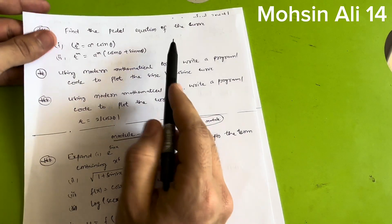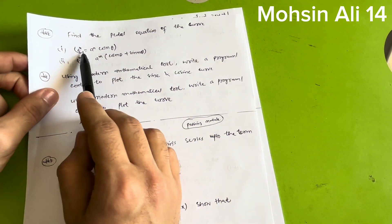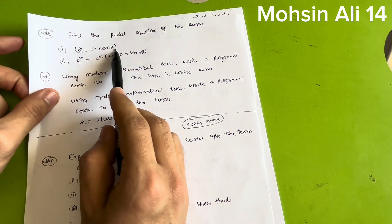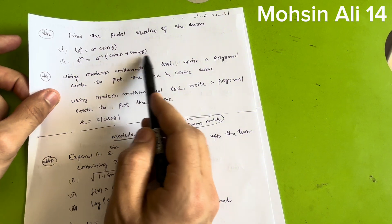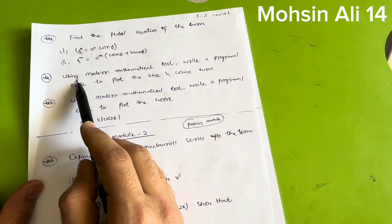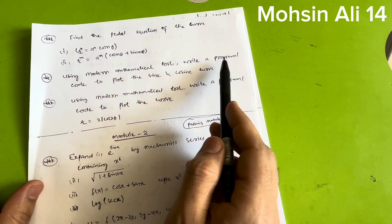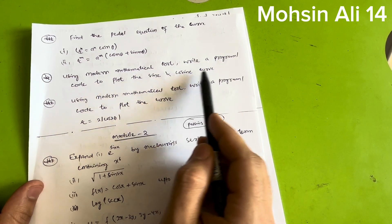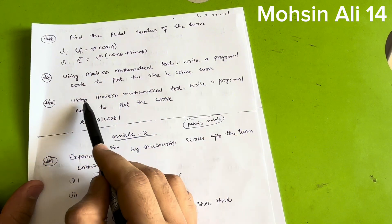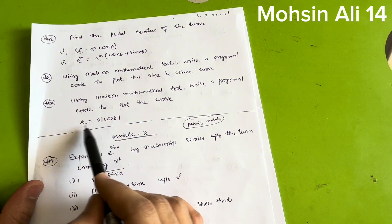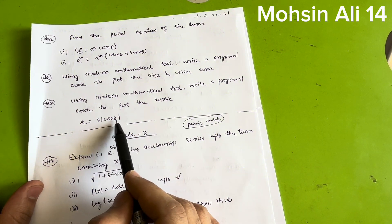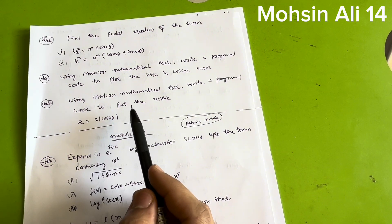Next, find the pedal equation of curves: rⁿ = aⁿcos(nθ) and rᵐ = aᵐ(cos(mθ) + sin(mθ)) — most important ones. Also, using a modern mathematical tool, write a program to plot the sine and cosine curve, and write a program to plot the curve r = 2cos(2θ). This covers all of Module one.